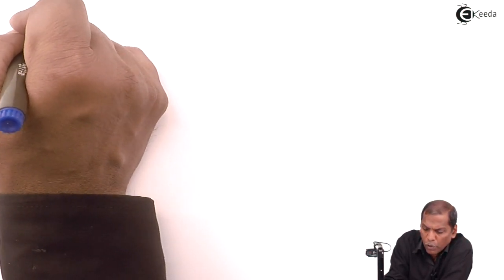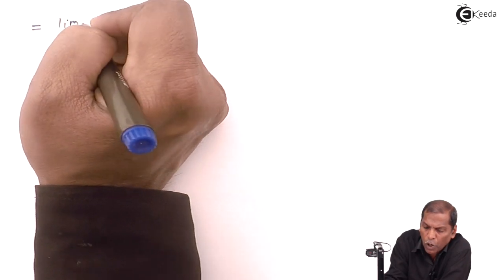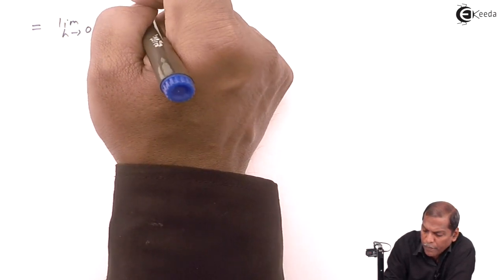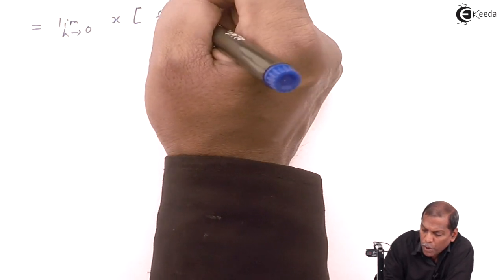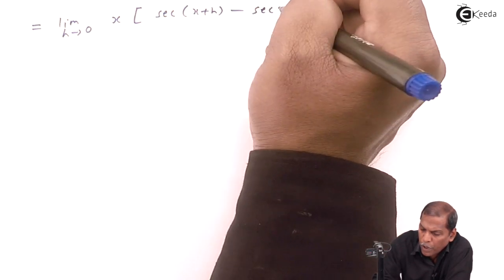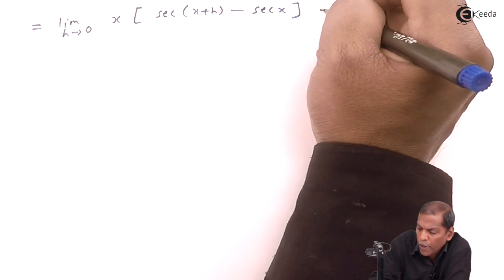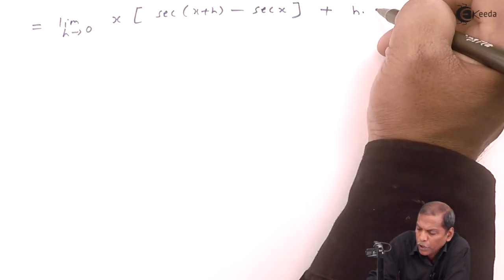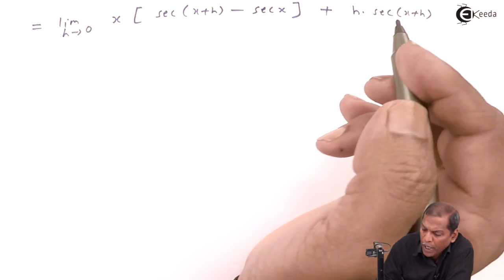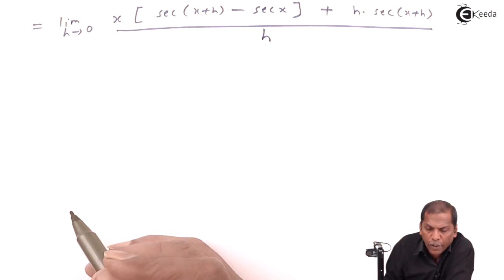So that equals the limit as h tends to 0. From the first term and last term we take x common, giving x·[sec(x+h) minus sec(x)], plus the second term h·sec(x+h), all divided by h.